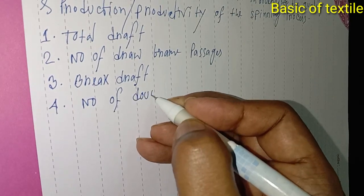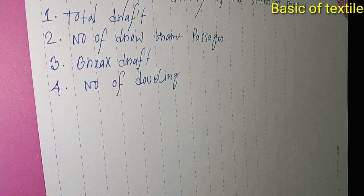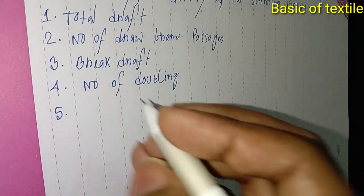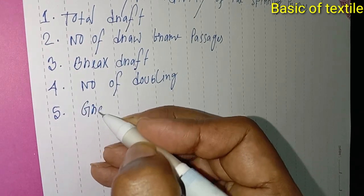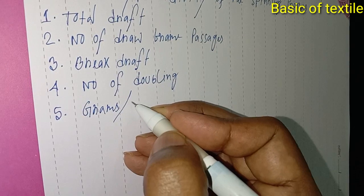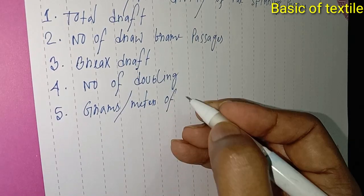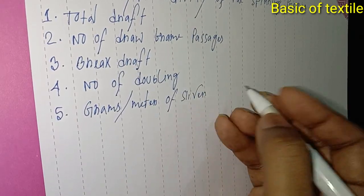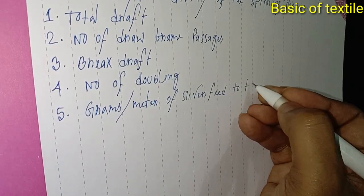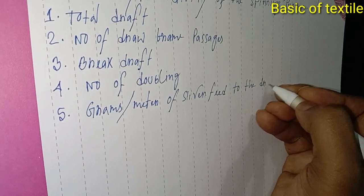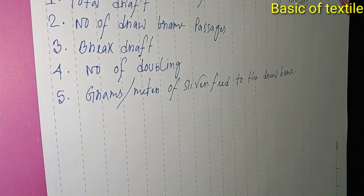Number five: grams per meter, number of slivers fed to the draw frame. Number six: fiber length.